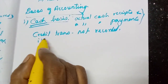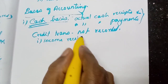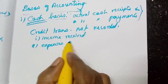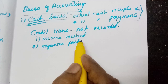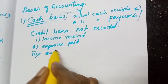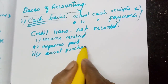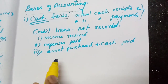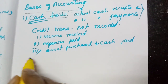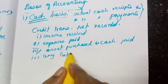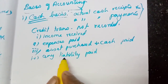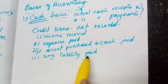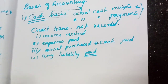Under cash basis, any income is recorded only when received, and any expenditure is recorded only when paid. If an asset is purchased and cash is paid, it is recorded. Any liability, whether it relates to the past year, present year, or future year, is recorded only when paid. That is the cash basis.